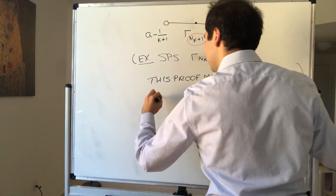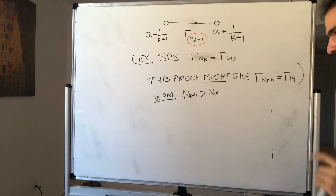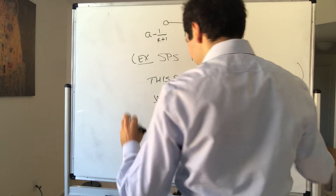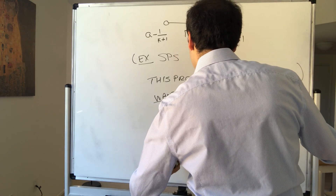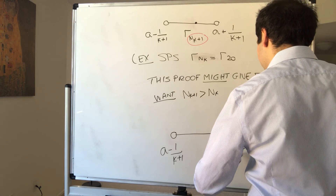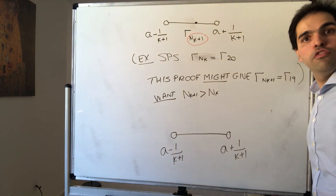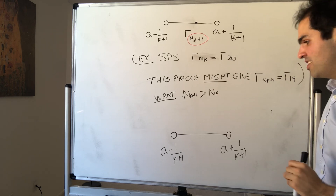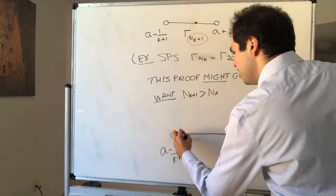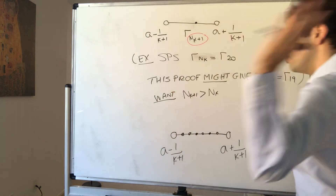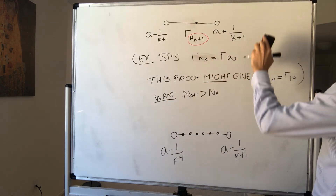We do have to work a bit harder. Consider again the interval (a − 1/(k+1), a + 1/(k+1)). Up to n_k there are only finitely many stops — the first, second, …, up to the kth express stop. But there's not only one rational number in that interval — there are actually infinitely many of them. So you can choose one that is completely new, after even the last express stop.